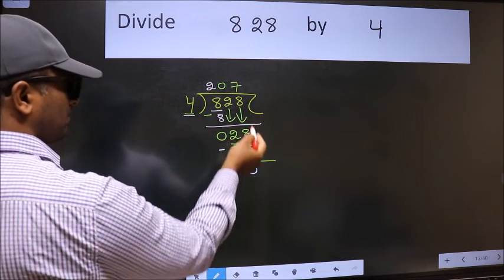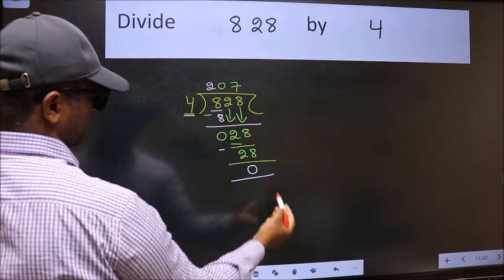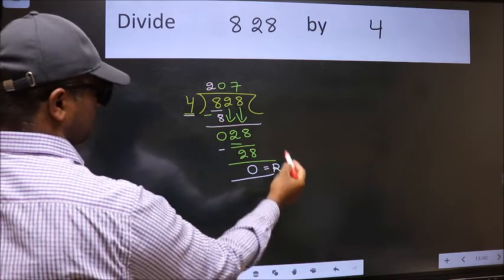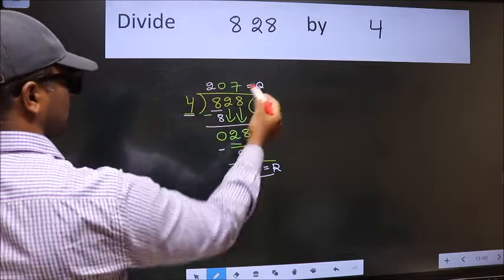No more numbers to bring it down. So, we stop here. This is our remainder and this is our quotient.